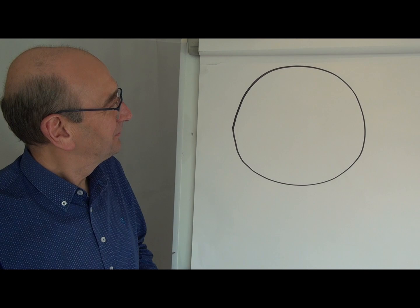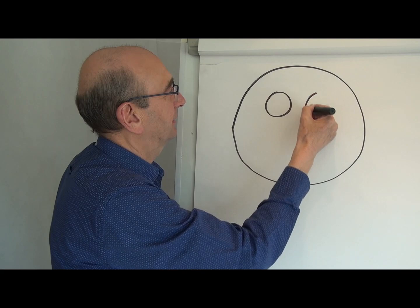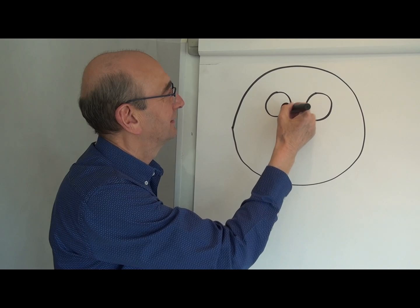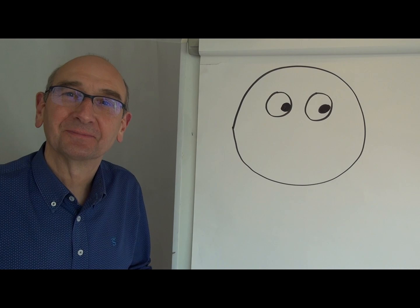There we go. So the next part of the exercise is to draw some eyes. So we want to draw a couple of circles there or ellipses in a way. And we'll draw some eyes inside the eyeballs in there. There we are.